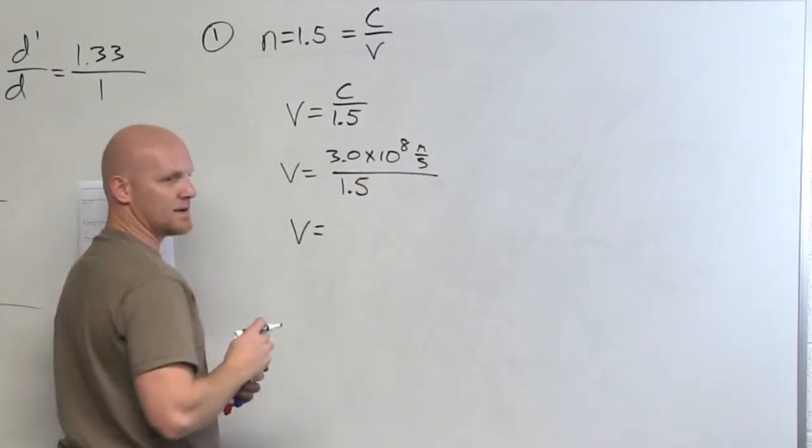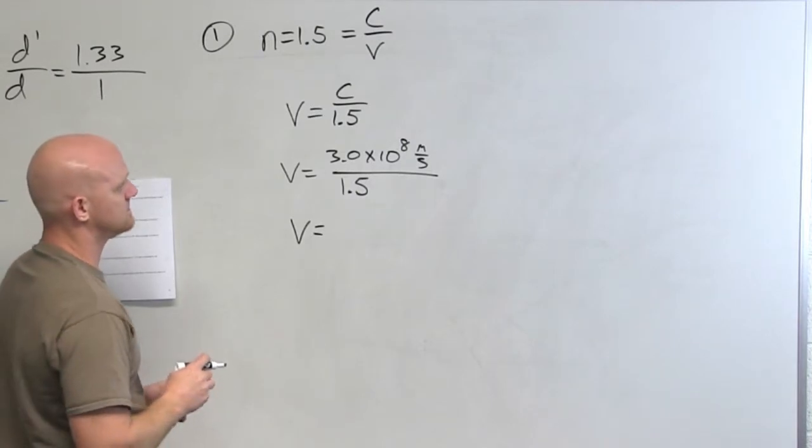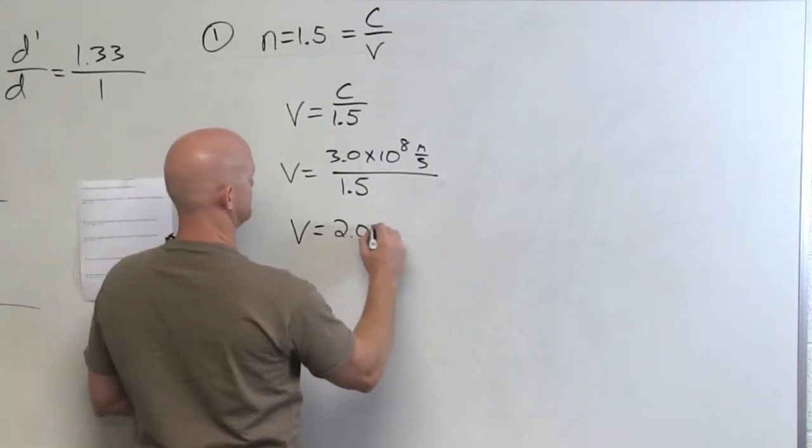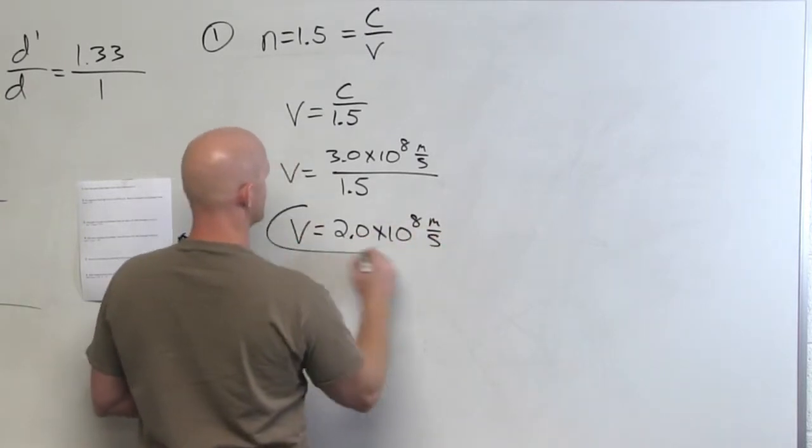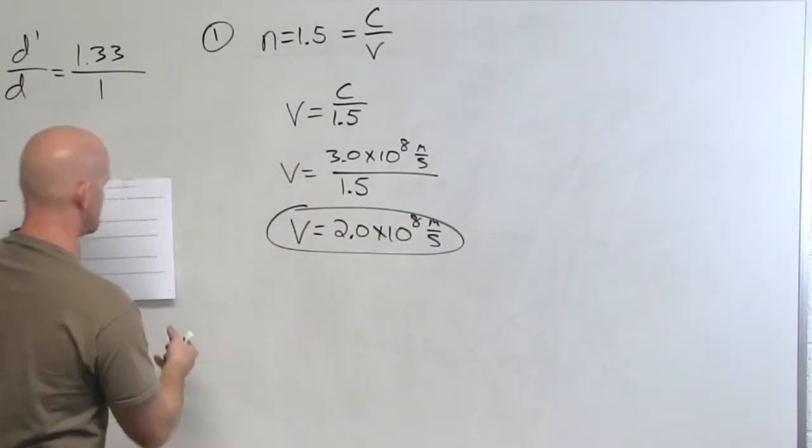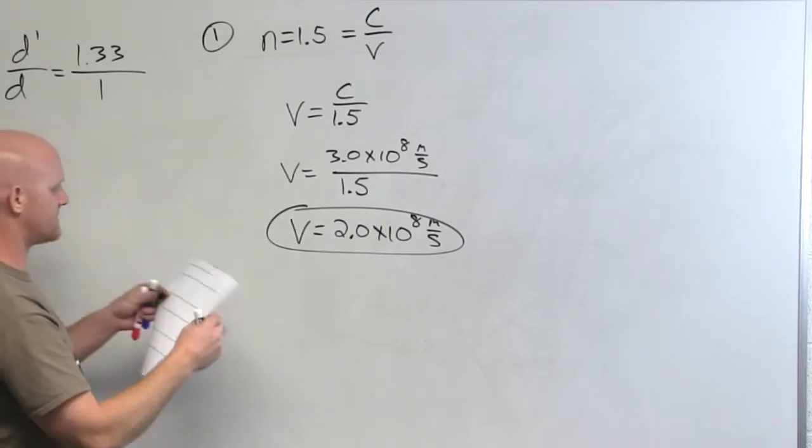And what do we get here? Good. 2.0 times 10 to the eighth meters per second. So a simple plug and chug based on the index of refraction.